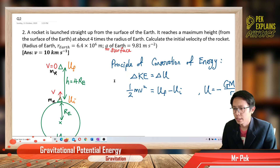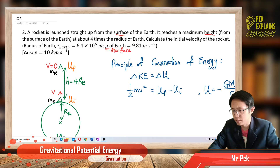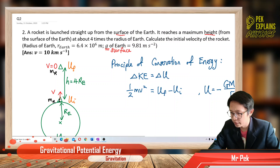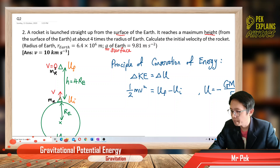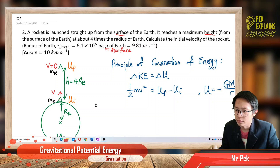The rocket starts from the surface and goes to a maximum height which is four times the radius of the Earth — two locations. You can see here the rocket is initially at the surface, launched upward with a certain velocity, until it reaches maximum height where velocity becomes zero. The height is four times the radius of the Earth.